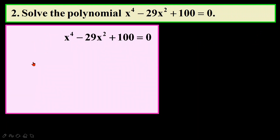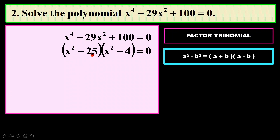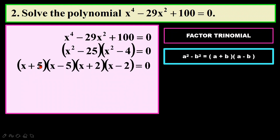How about this question? In this polynomial I don't see any common factor, but although this is power of 4, I can actually factorize this trinomial. So I will try to factorize it first. Then I have to think if there is any theorem I can use. For example, x squared minus 25 is x squared minus 5 squared, and x squared minus 4 is x squared minus 2 squared. So I can use this formula and factorize this into x plus 5, x minus 5, x plus 2, and x minus 2.